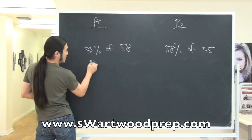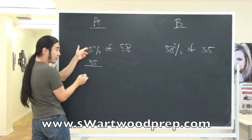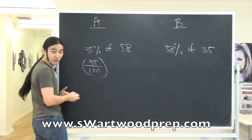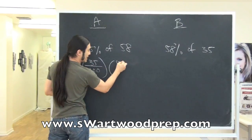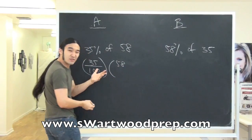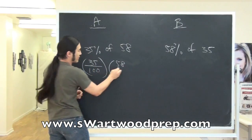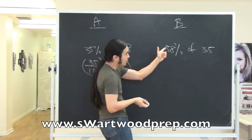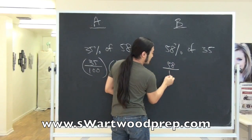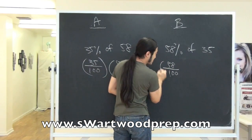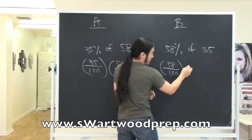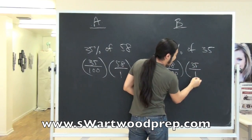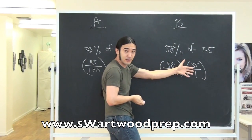One way to think of this is: 35% is 35 parts out of 100, and you're doing this out of 58 — I'll write this as 58 over 1, same thing. Now look over on this side: this guy has 58 parts out of 100, acting on 35 — same thing as 35 over 1.